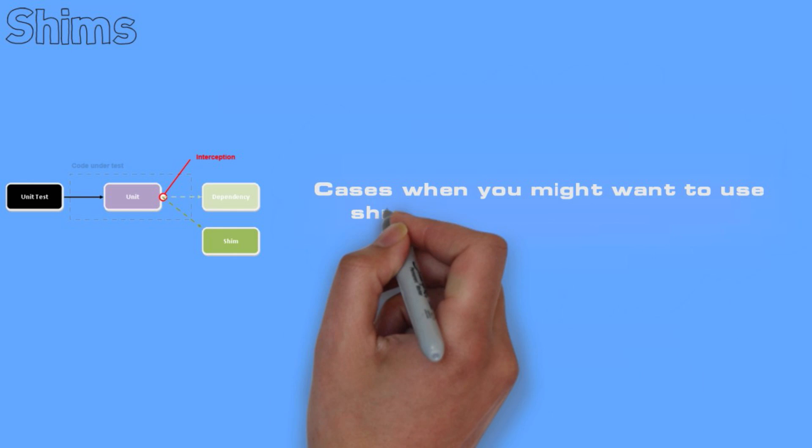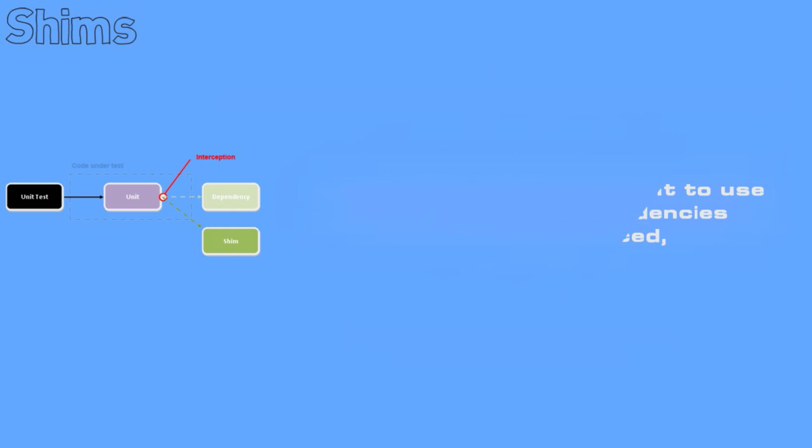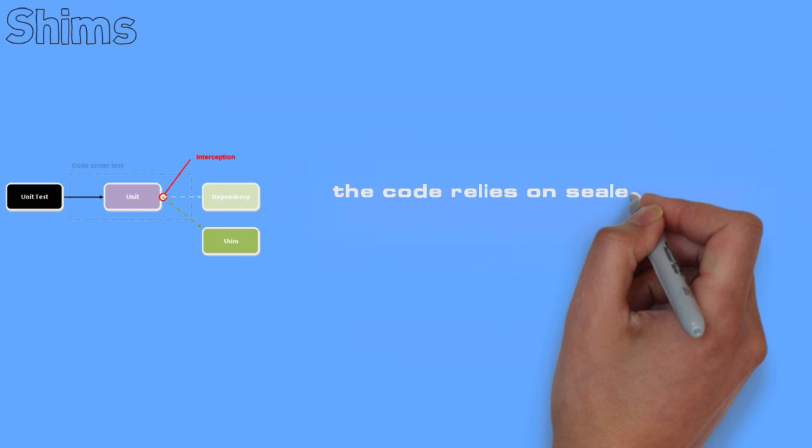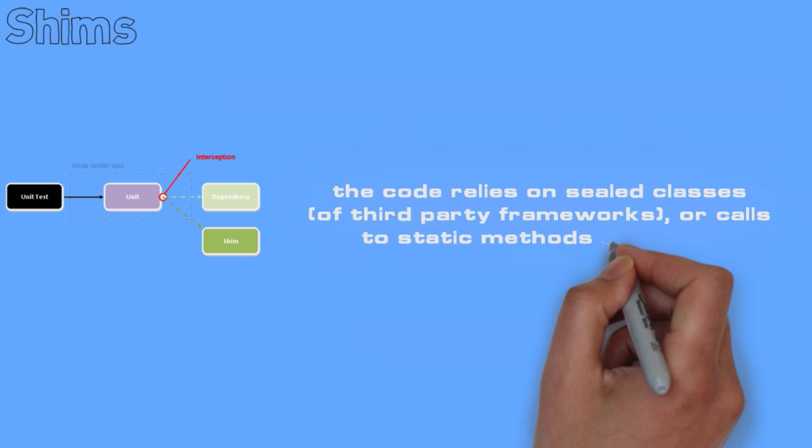Cases when you might want to use shims are when dependencies cannot be replaced. The code relies on sealed classes, maybe of third-party frameworks, or calls are made to static methods.